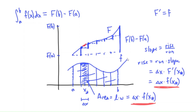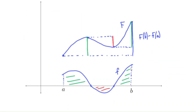One last thing: I assumed f was positive. If f dips below the x-axis, then delta x times f of x star will be negative, so that portion counts as a negative area. Correspondingly, the antiderivative would drop in that region. For a function that is sometimes above and sometimes below the x-axis, the antiderivative rises over regions where f is positive and drops over regions where f is negative, and the net signed area equals F of b minus F of a by the same reasoning.